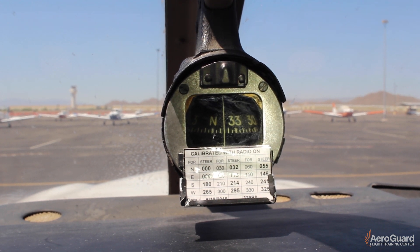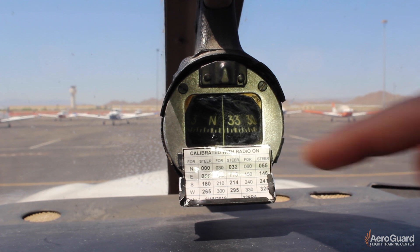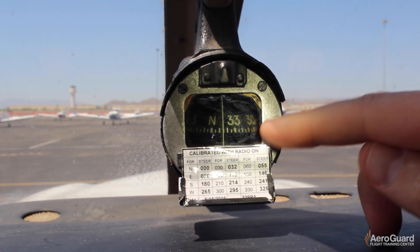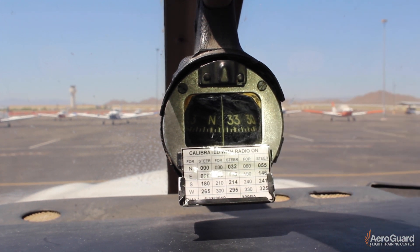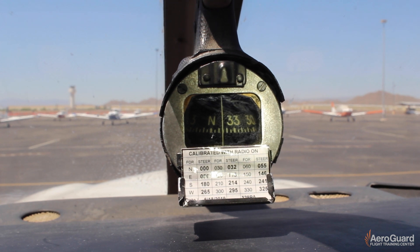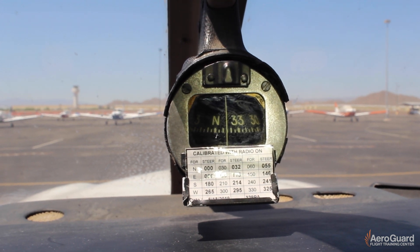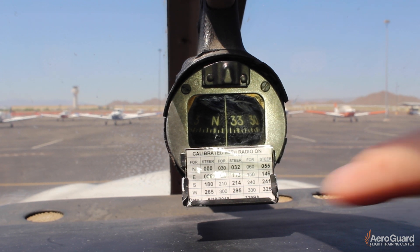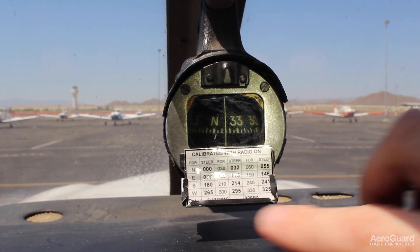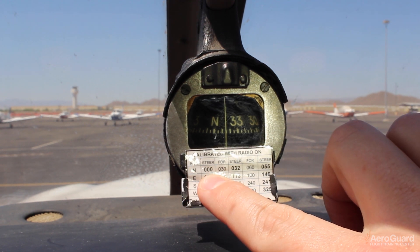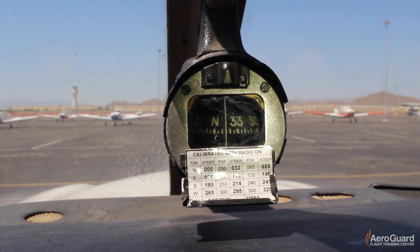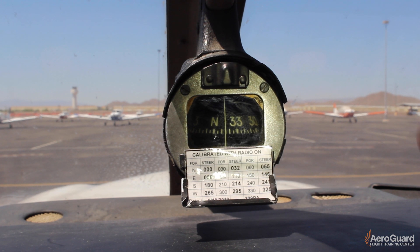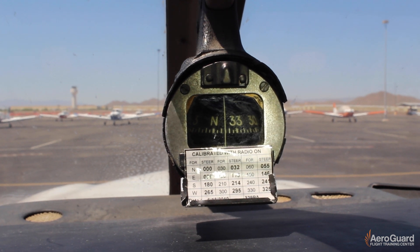So maintenance is tasked with creating this compass card, and that compass deviation card tells us how to correctly position the compass for a heading we want. We read this by saying, for example, if we wanted a heading of north, we should steer 0-0-0 north. So there's no deviation on this particular compass on a heading of north.